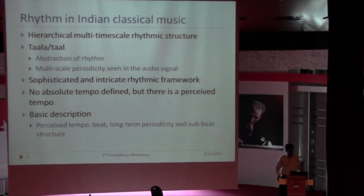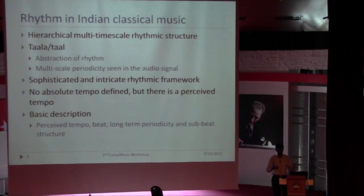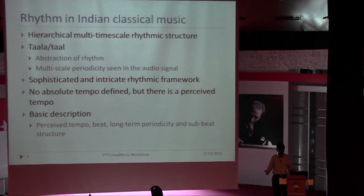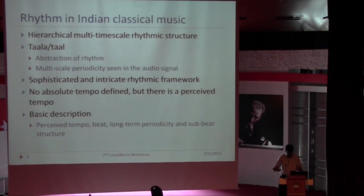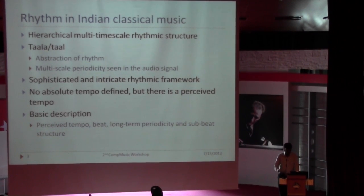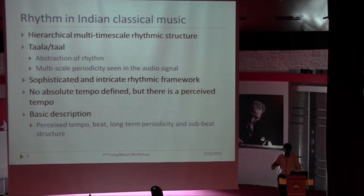Rhythm in Indian classical music is hierarchical. We have an avart, then we have a vibhag which corresponds to an avartanam and different angas in Carnatic music. And even within a vibhag we have the matras which define it, meaning we have structure at multiple different levels.